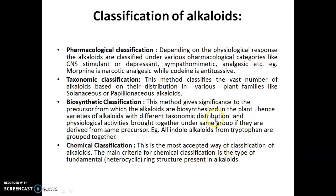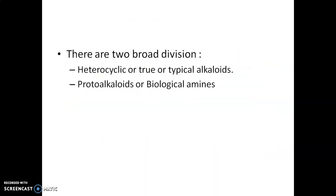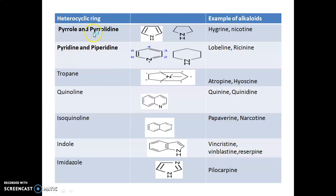The most important classification is chemical classification, which mainly depends upon the heterocyclic ring nature present in alkaloids. There are two broad divisions: true alkaloids, which contain a heterocyclic ring with nitrogen; and protoalkaloids, also called biological amines, where the heterocyclic ring is absent but nitrogen is present. An important nomenclature note: alkaloid names should end with the suffix -I-N-E (i.e., '-ine').